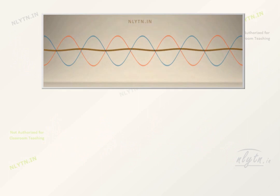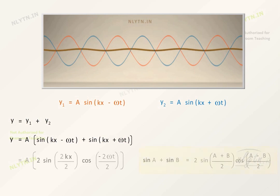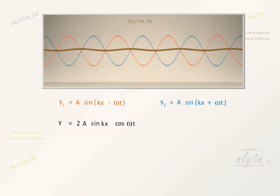Let us represent these constituent waves by these equations. We can write the equation of the resultant pattern by applying the principle of superposition. On solving, we get this equation, which is the equation of a standing wave. This equation is of course not the equation of a travelling wave because here x and t are not related like this.